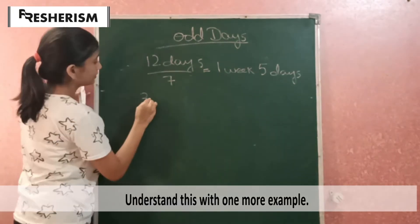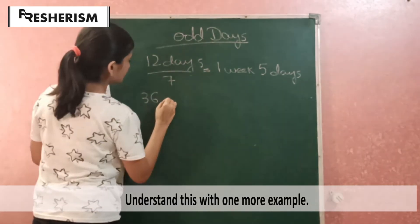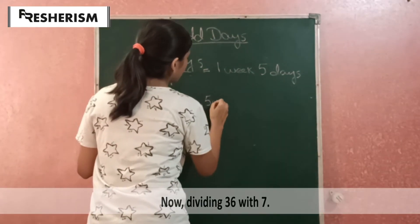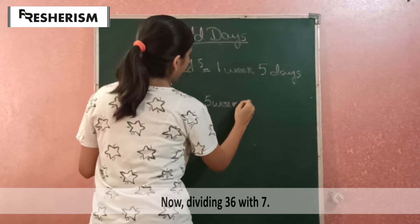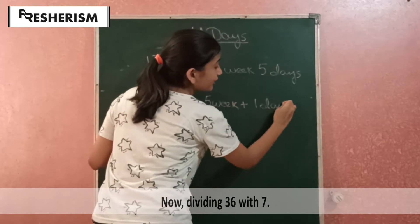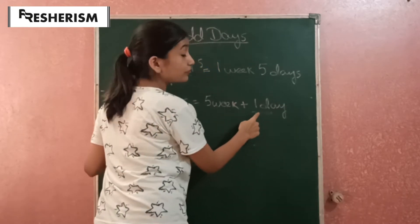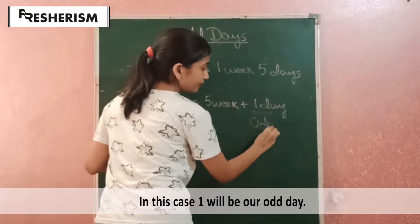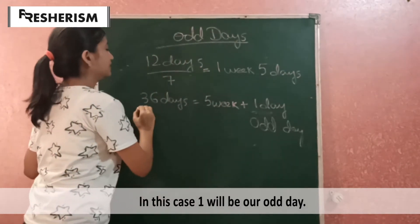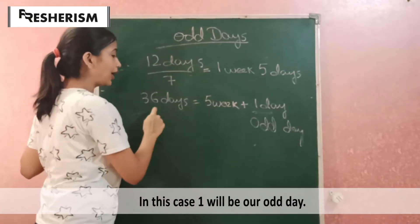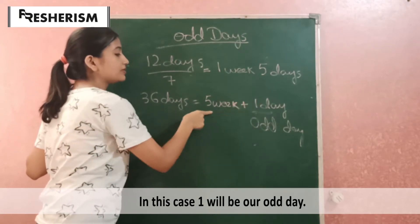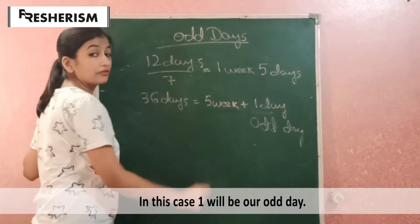Let's check another example: 36 days. 36 days equals 5 weeks and 1 day. The 1 is the remainder, so 1 will be the odd day. If a question asks how many odd days in a 36-day period, there will be only one odd day because there will be 5 weeks and the remainder will be 1.